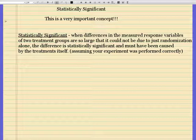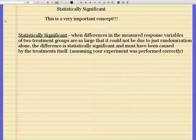When differences in the measured response variables of two treatment groups are so large that it cannot be due to just randomization alone, the difference is statistically significant and must have been caused by the treatments itself, assuming your experiment was performed correctly in the first place. So let's talk about this and get an idea.